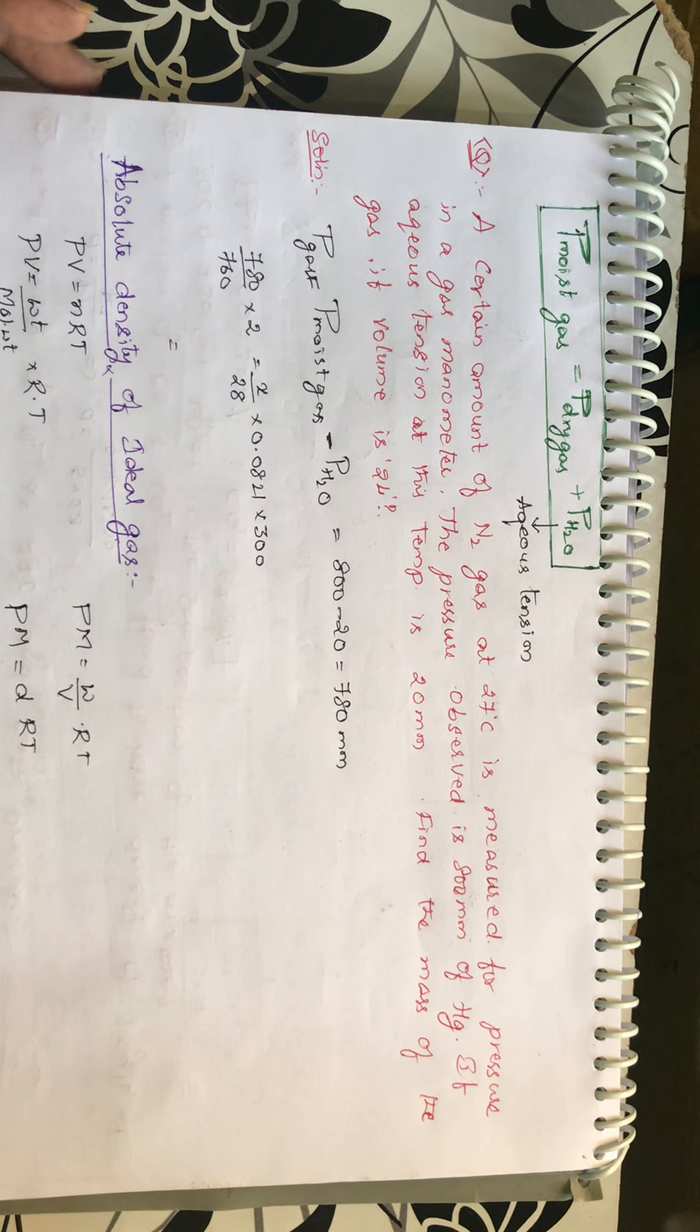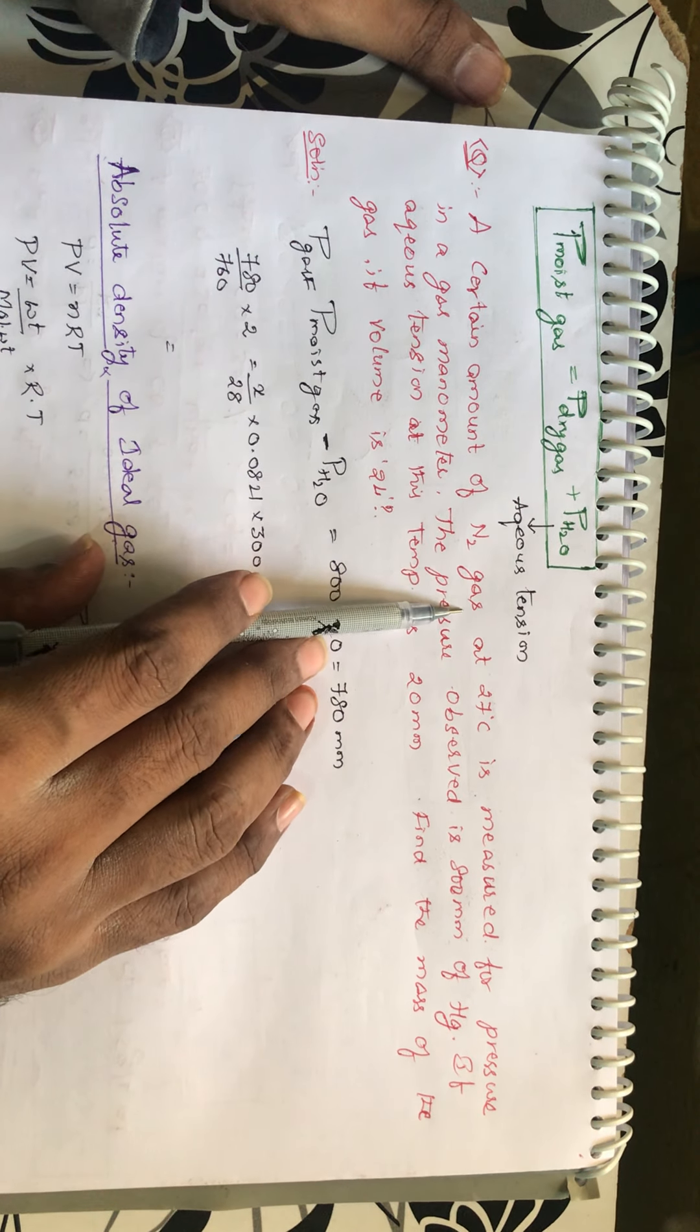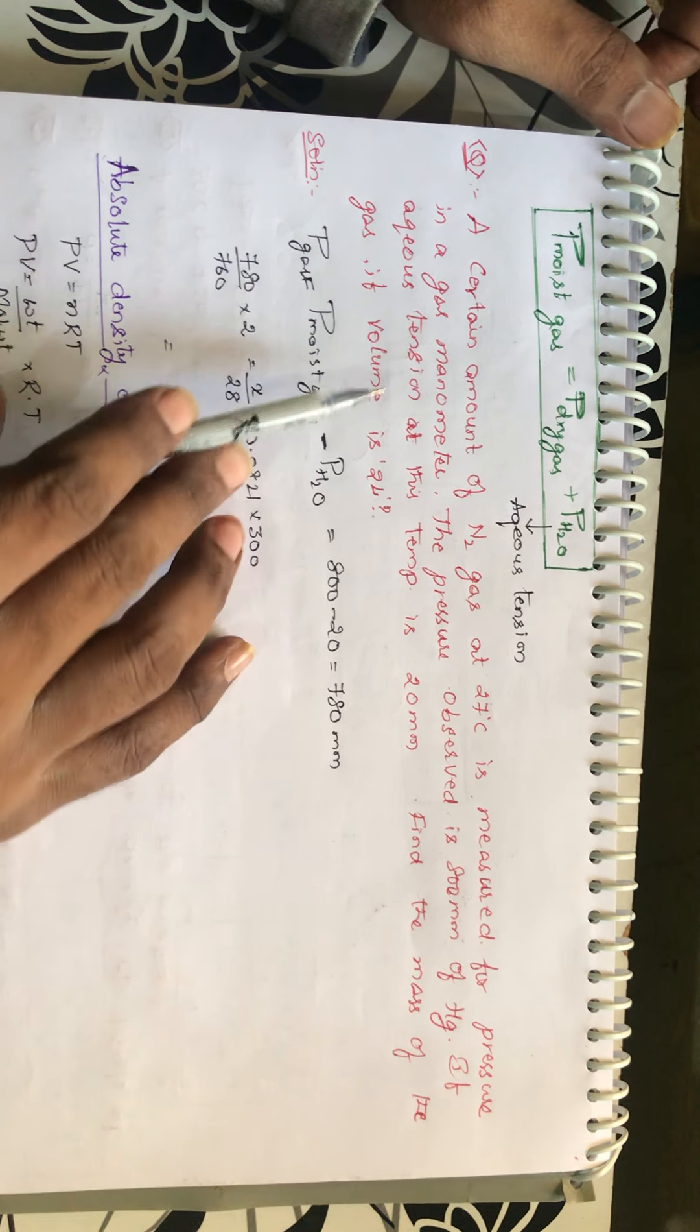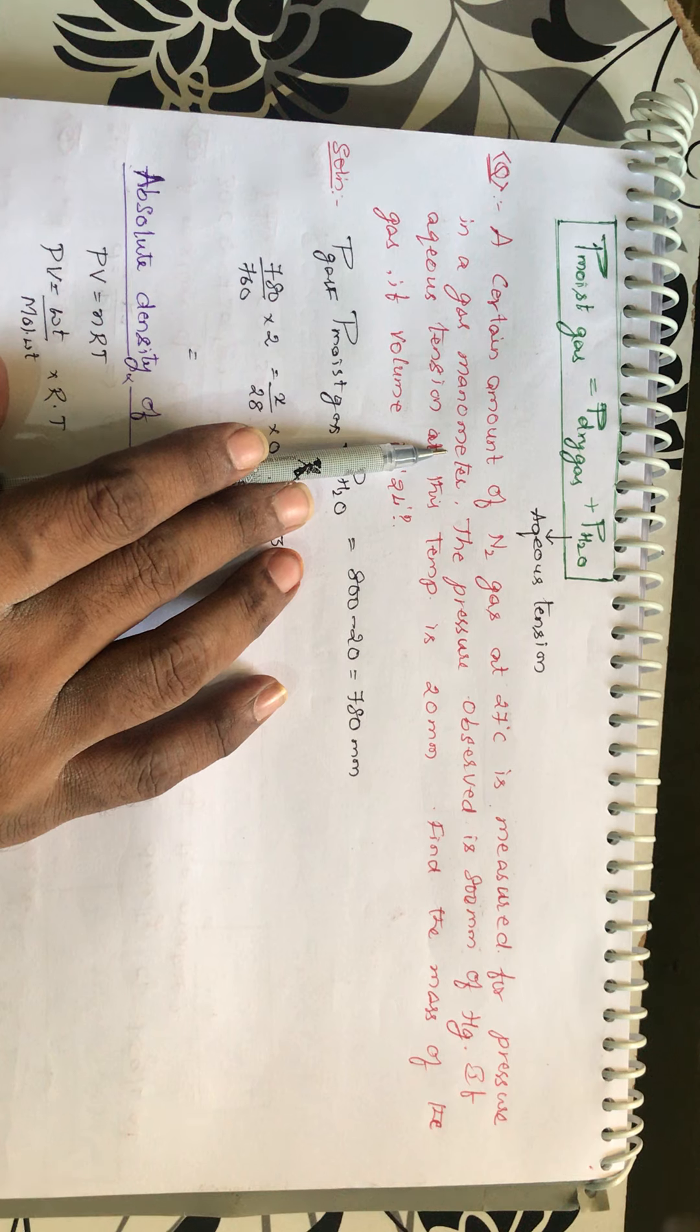Now let's take students one example. A certain amount of N2 gas at 27 degrees centigrade is measured for pressure in a gas manometer. He is mentioning manometer, barometer, all the same things.